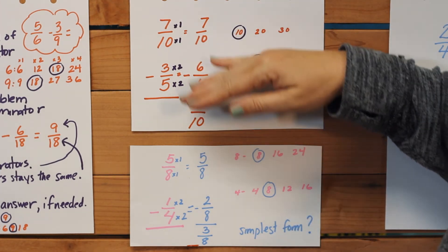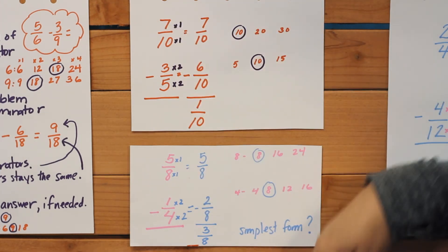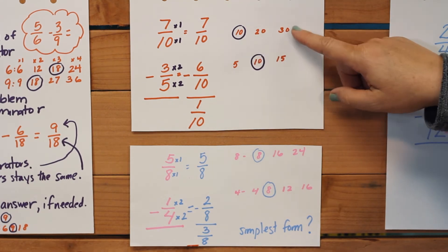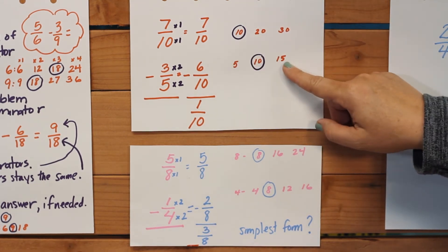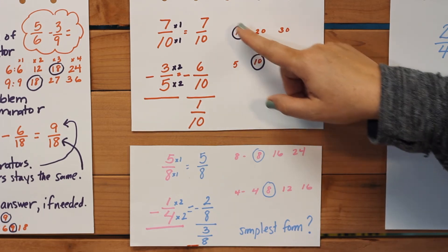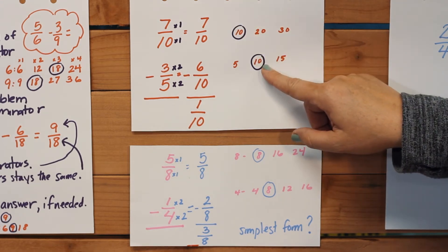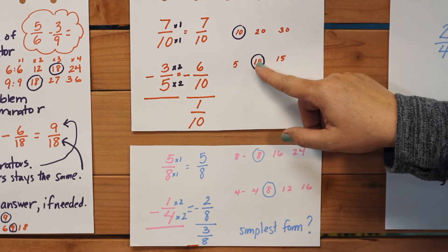Well, as we're looking for multiples of ten and five, we have ten, twenty, and thirty for ten, and we have five, ten, and fifteen. Ten is common in both numbers, so ten is going to be what we want our denominator to be.